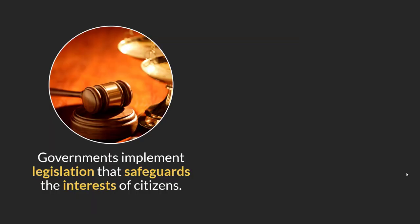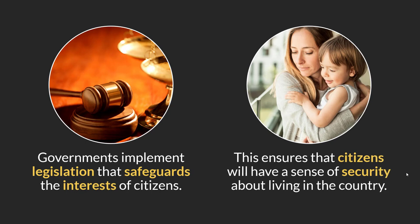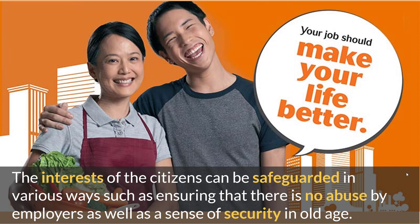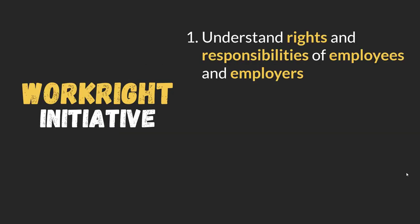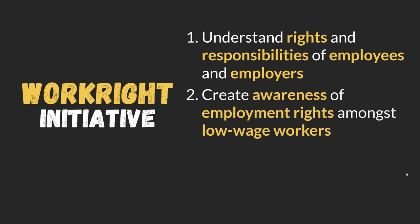The last role of government is to safeguard the interests of citizens. The government implements legislation to safeguard citizens' interests, giving them a sense of security living in the country. Citizens' interests vary widely and can be safeguarded in various ways, such as preventing employer abuse in terms of wages and working conditions, and ensuring security in old age. The Work Right initiative is one example — it ensures lower-income and lower-wage earners are protected, creating awareness of employment rights and ensuring workers understand the rights and responsibilities of both employers and employees. Some workers don't know their rights, such as their wages being unfairly docked.